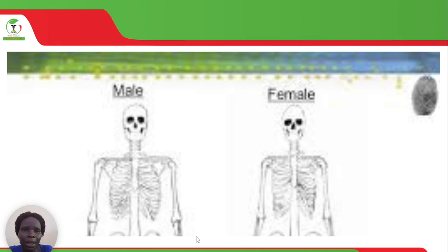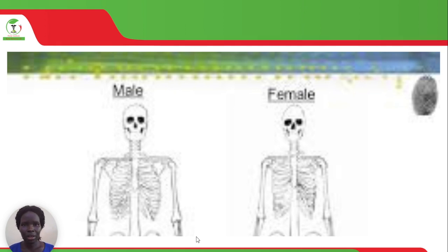We have the male and female structure of the skeleton — the male skeleton looks to be broader, whereas the female skeleton looks to be narrower.